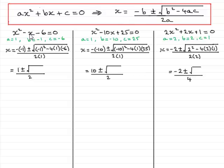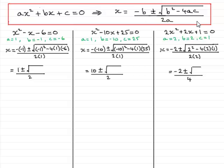To demonstrate this, I've got three quadratic equations here. If we look at the first one, x squared minus x minus 6 equals 0, a would be 1, b would be minus 1, and c would equal minus 6. And to save time, I've put these values into the quadratic formula.